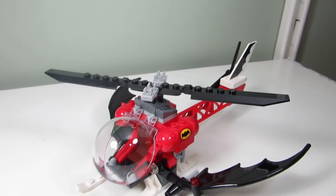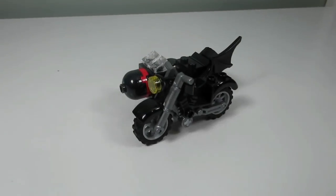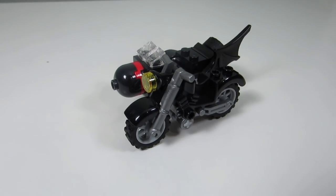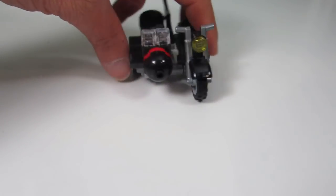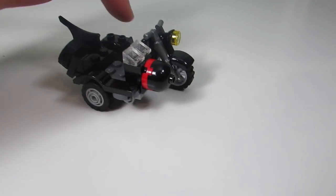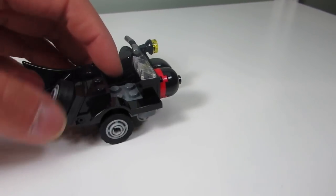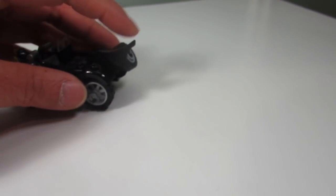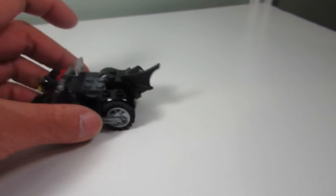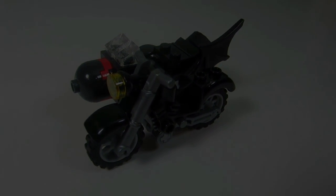And here we have a mini little Batcycle and it looks very nice. We have a little passenger seat for Robin so Batman and Robin can ride together. In the back we have a little spare tire and what else, nothing much. We have a little wing here to make it like a bat wing and this is the Batcycle.